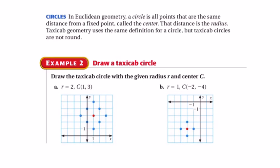Circles in Euclidean geometry. A circle is all points that are the same distance from a fixed point called the center. That distance is the radius. In taxicab geometry, however, the definition of a circle is not really round. We can't use the exact same idea here but it is the same distance.